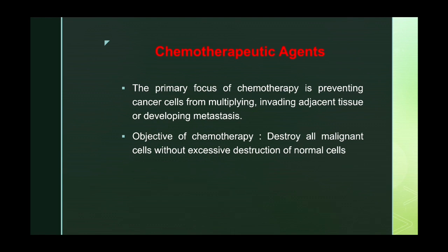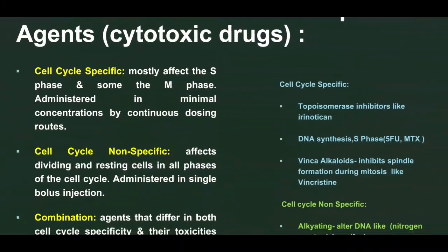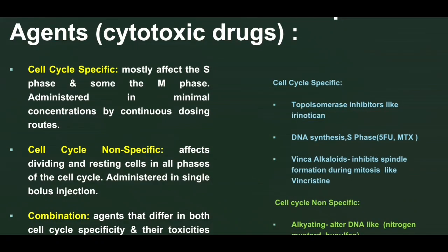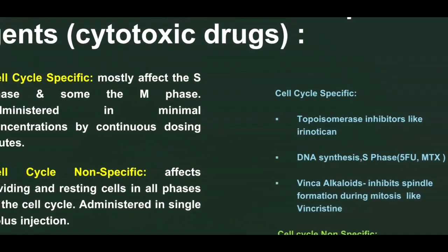Chemotherapeutic agents focus on preventing cancer cells from multiplying, invading adjacent tissue, or developing metastasis, while destroying malignant cells with minimal destruction of normal cells. Chemotherapeutic agents are classified into three groups according to their action on the cell cycle: cell cycle specific, cell cycle non-specific, or combination. Cell cycle specific drugs mainly affect the S phase and M phase, administered in minimal concentration by continuous dosing.